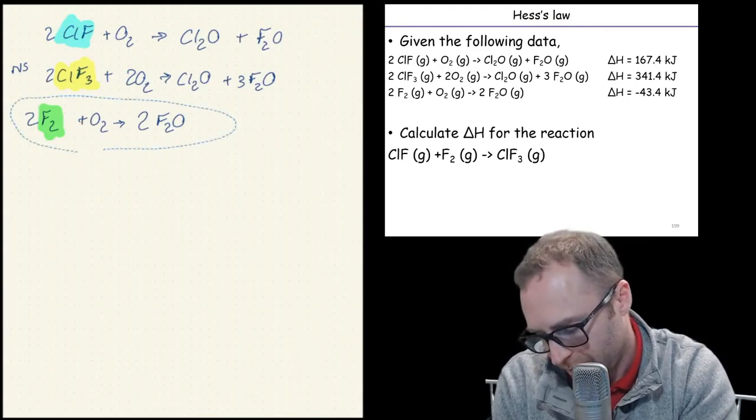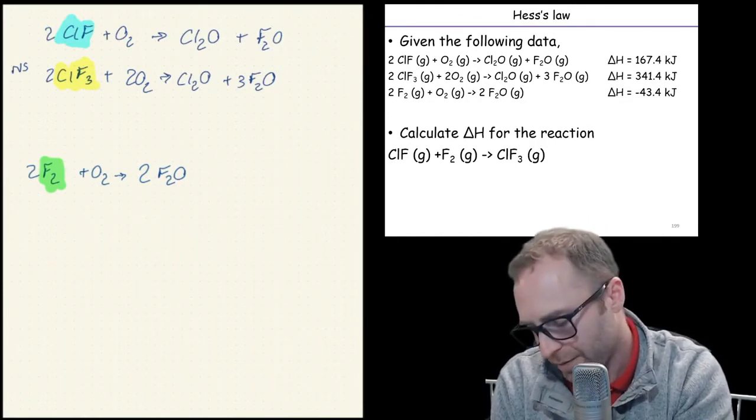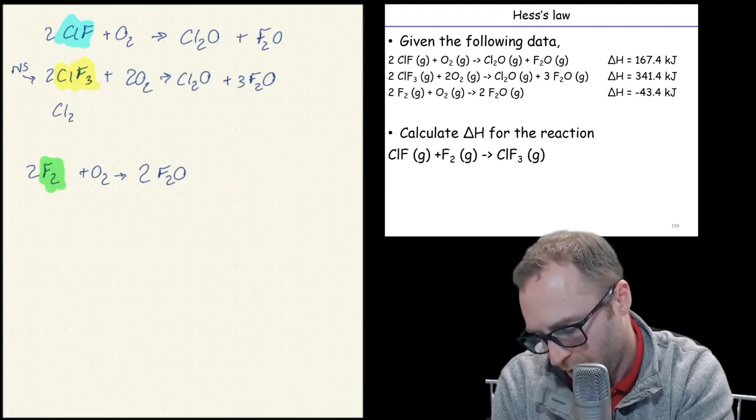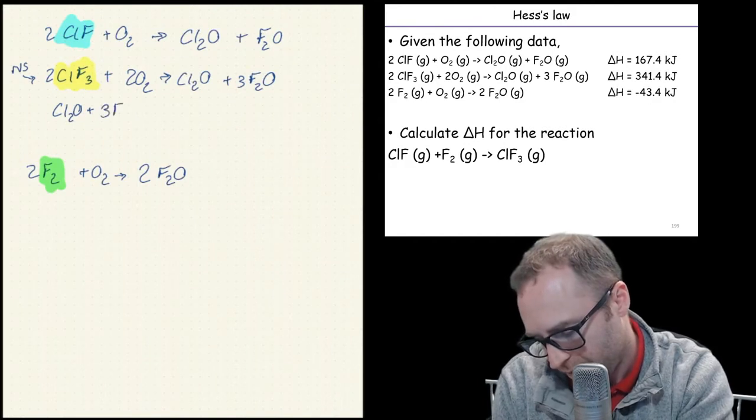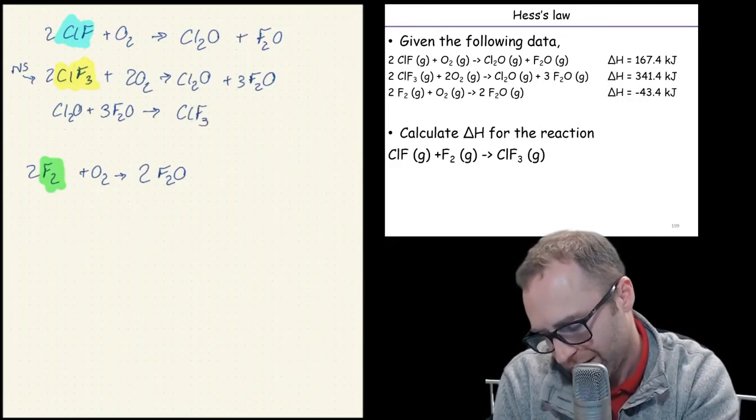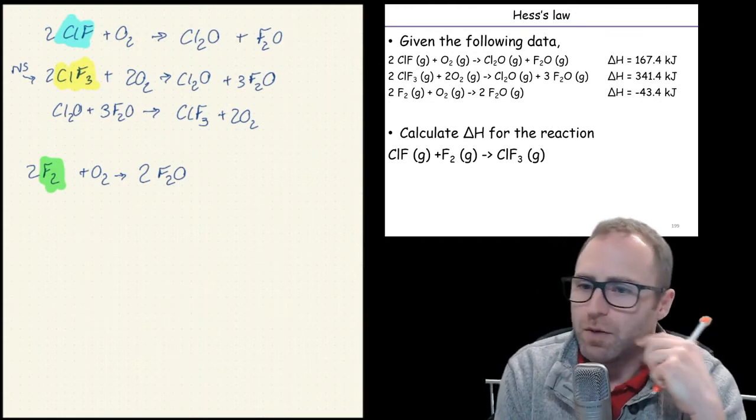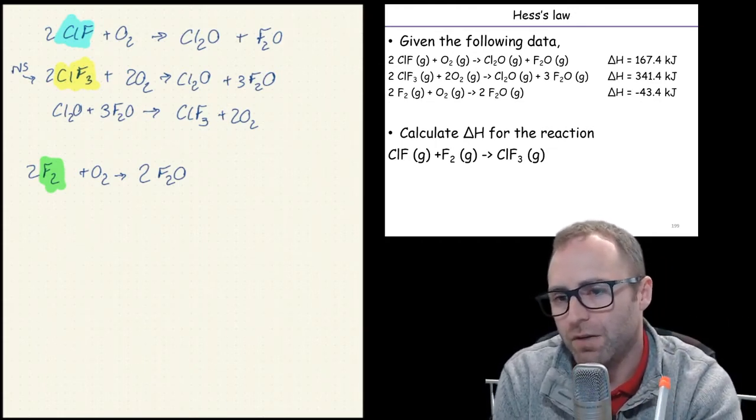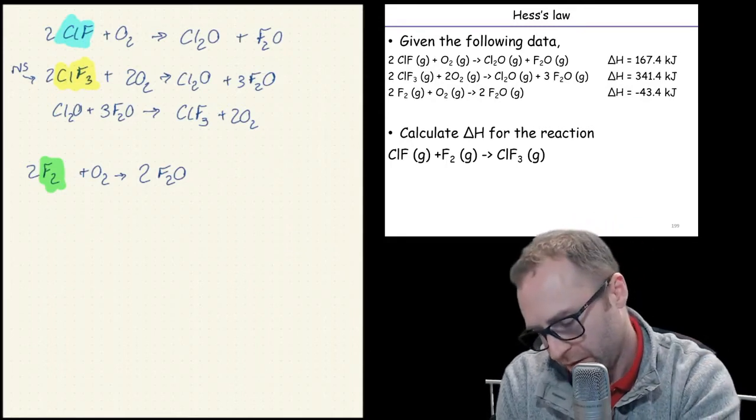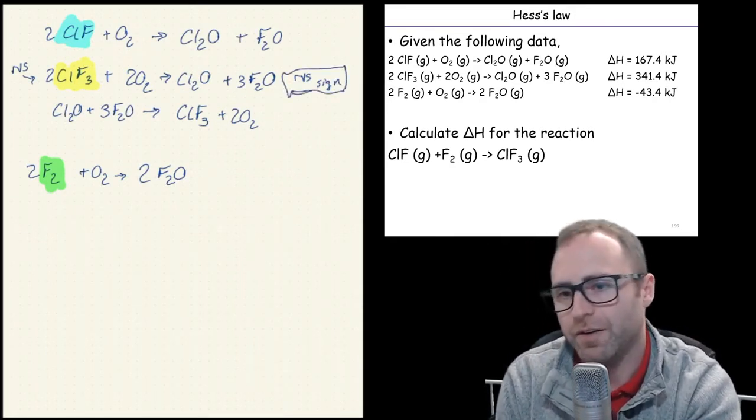So using the magic of iPad, I'm going to move that equation down there because I didn't give myself a ton of room. I'm now going to reverse that second equation. I'm going to write out Cl2O plus 3 F2O going to form ClF3 and two oxygens. Now remember how I didn't write out delta H before?